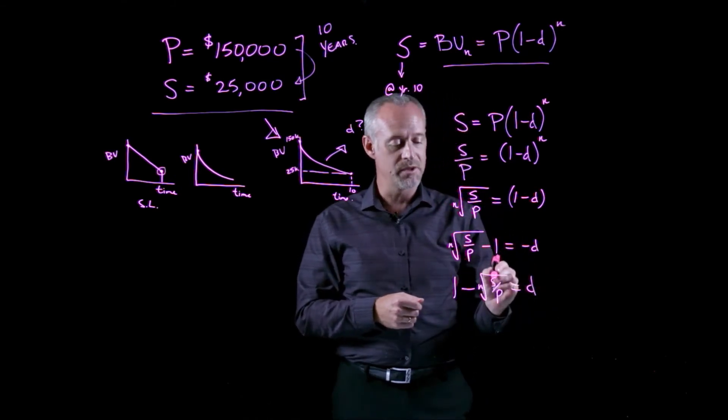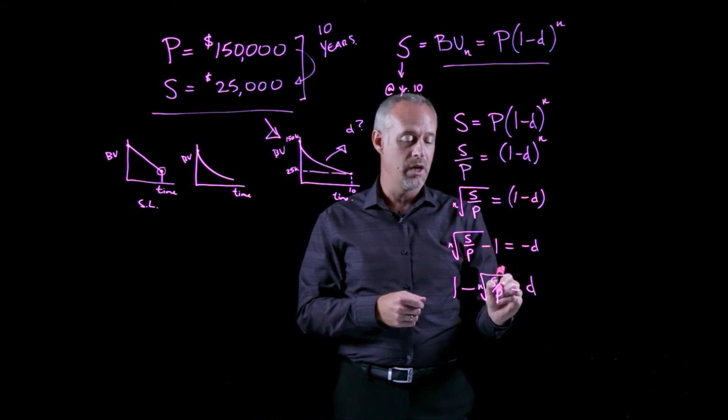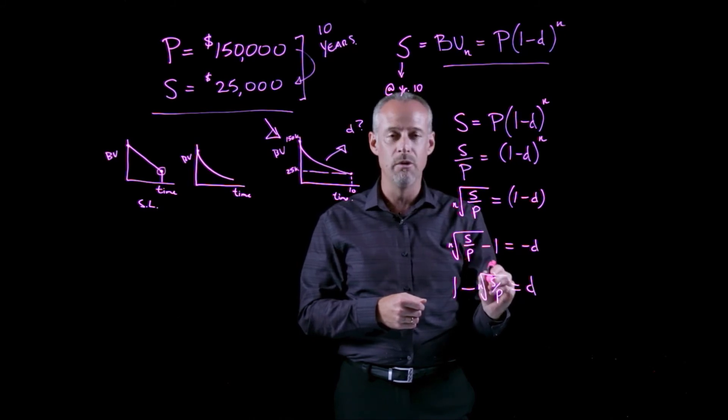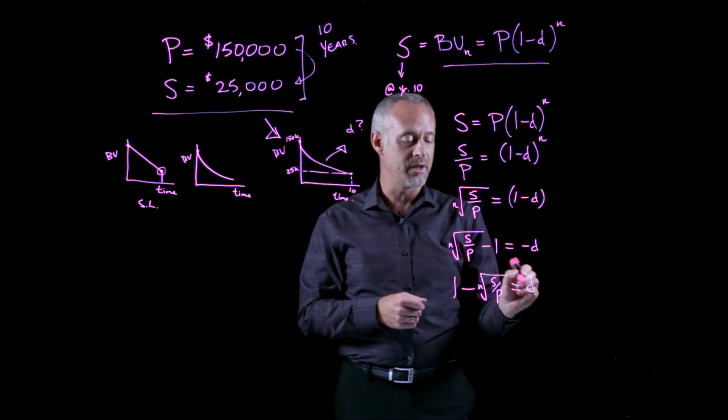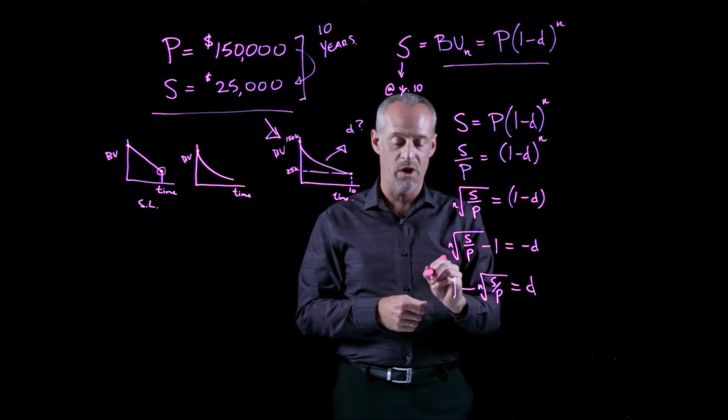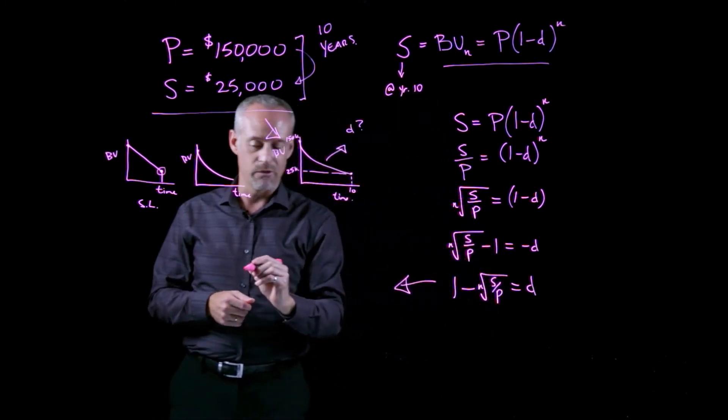So now I know if I'm given a salvage value, given an asset's purchase price, and if I know the number of years between these two values, then I can solve for the rate that gives me the solution to the problem. Let's plug the numbers in and see what we get for this problem.